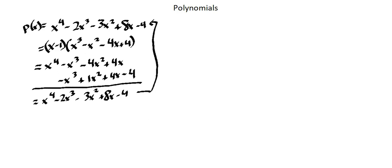In part 2 we're asked to fully factorize the function. We know one factor is x minus 1, and now we're left to work with x cubed minus x squared minus 4x plus 4. It's this second factor that I want to fully factorize. So I'm going to set up synthetic division. The coefficients are 1, negative 1, negative 4, and positive 4.